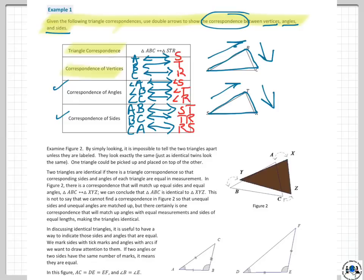So this is Example Figure 2. By simply looking, it is impossible to tell, and again, here's our figure 2 right here. By simply looking, it is impossible to tell the two triangles apart unless they are labeled. They look exactly the same, just as identical twins look the same. That's a really silly kind of analogy, I think. Anyhow, one triangle could be picked up and placed on top of the other.